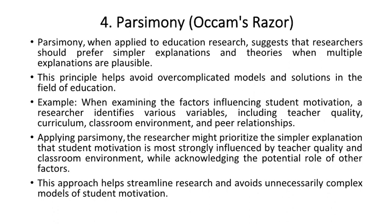Example: when examining the factors influencing student motivation, a researcher identifies various variables including teacher quality, curriculum, classroom environment, and peer relationships. Applying parsimony, the researcher might prioritize the simpler explanation that student motivation is most strongly influenced by teacher quality and classroom environment, while acknowledging the potential role of other factors. This approach helps streamline research and avoids unnecessarily complex models of student motivation.